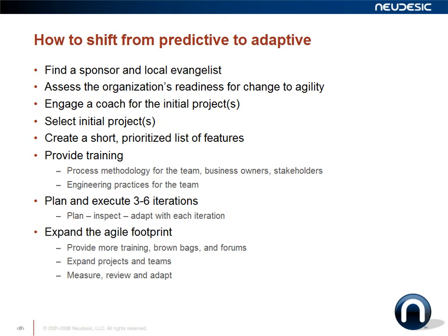With every iteration, you will plan, and at the end of the iteration you'll inspect — including feedback in a demonstration to your customer or product owner — then adapt and move on to the next iteration. You're constantly learning and taking action on your learnings with every single iteration. It's not a situation where at the end of the project your final action is a lessons-learned or post-mortem that becomes a piece of shelfware. In agile teams, you take action on those lessons every single iteration.